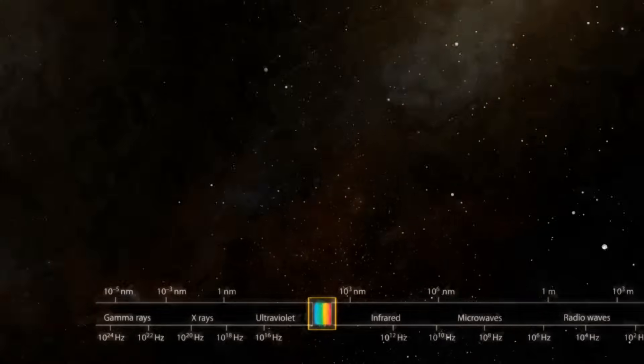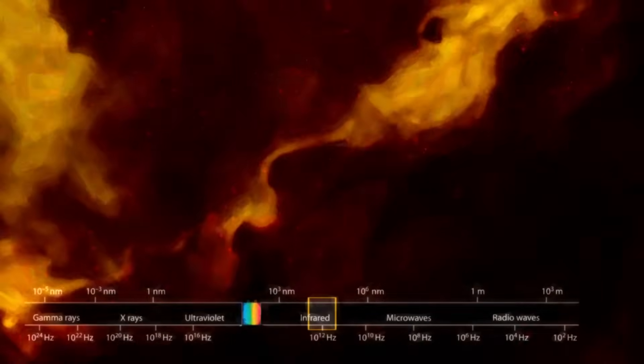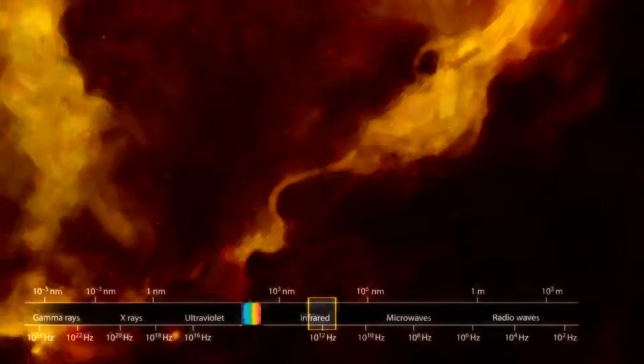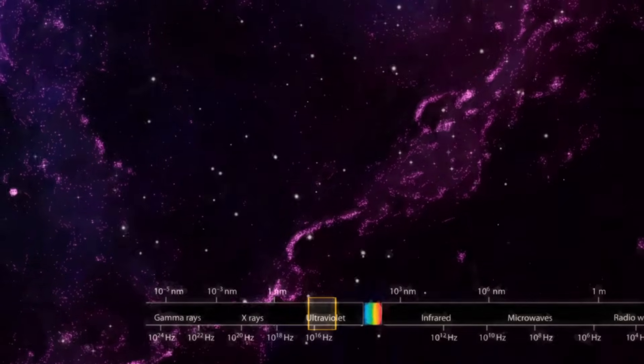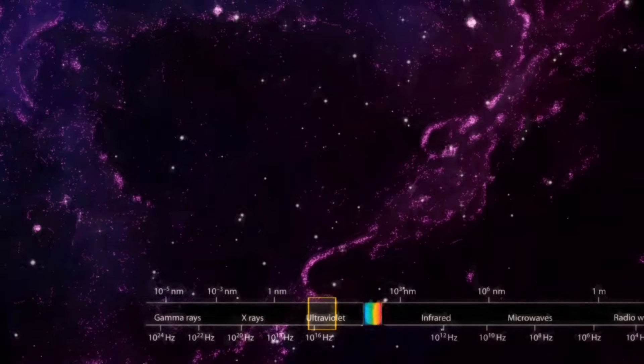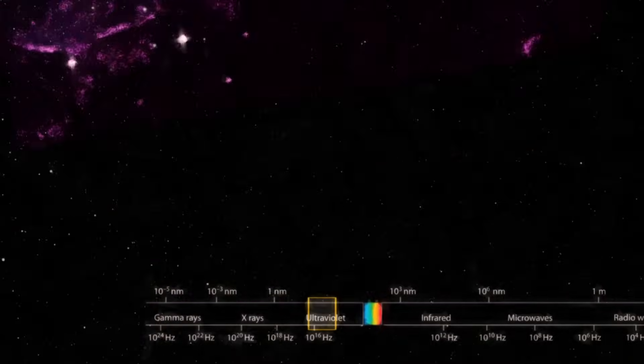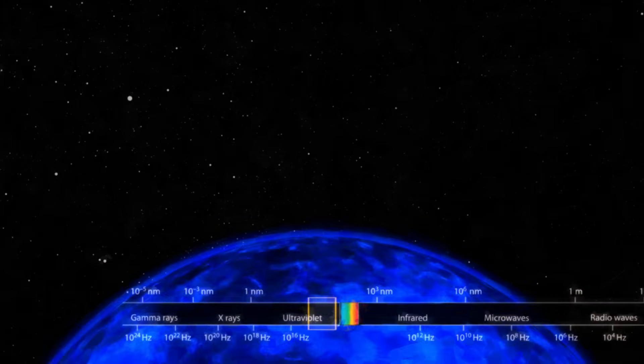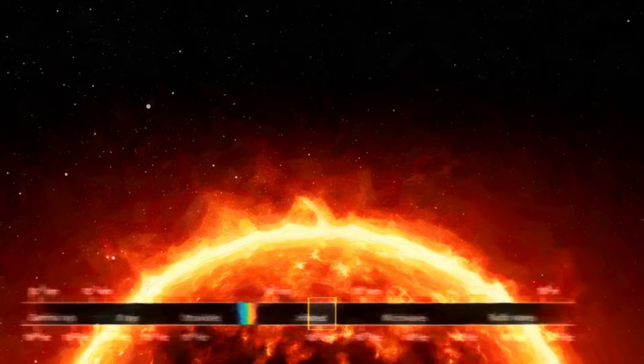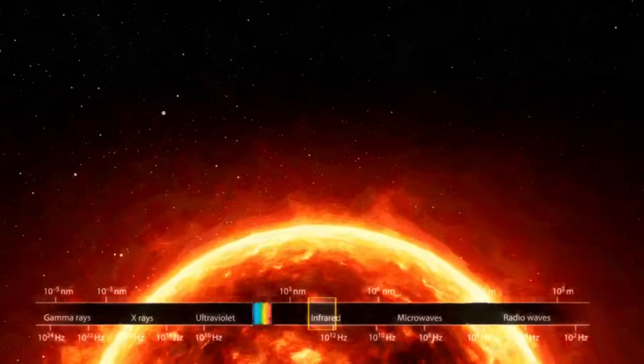We can also study the infrared light emitted by colder objects like the gas and dust clouds in space, and the ultraviolet light from the hot stars recently born from those clouds. Studying different wavelengths not only gives us a more complete picture of any single object, but also different views of the universe.